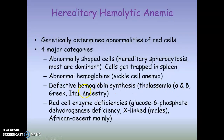There can be defective hemoglobin synthesis — the biggest example is thalassemia, which can be alpha or beta. Generally, people who have thalassemia have Greek or Italian ancestry. Then there are red cell enzyme deficiencies, where different enzymes are defective and proper red blood cell development and function is impaired.